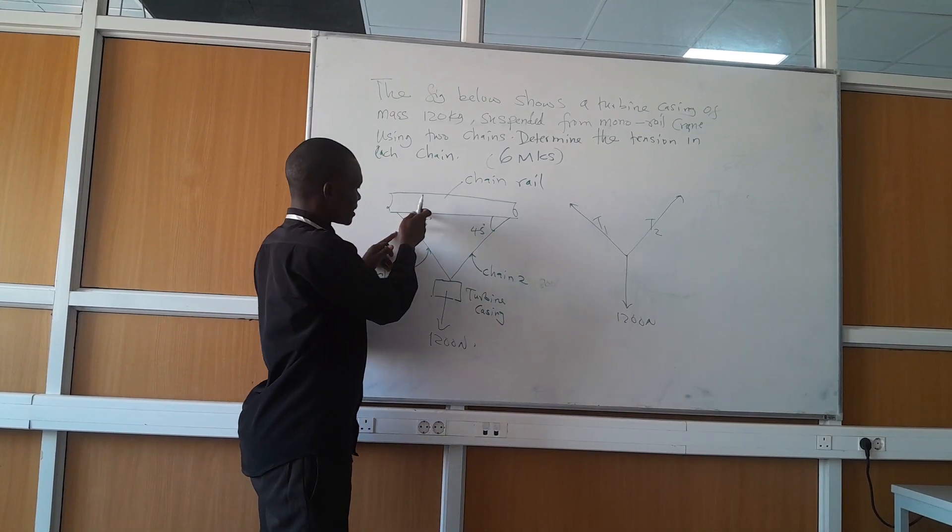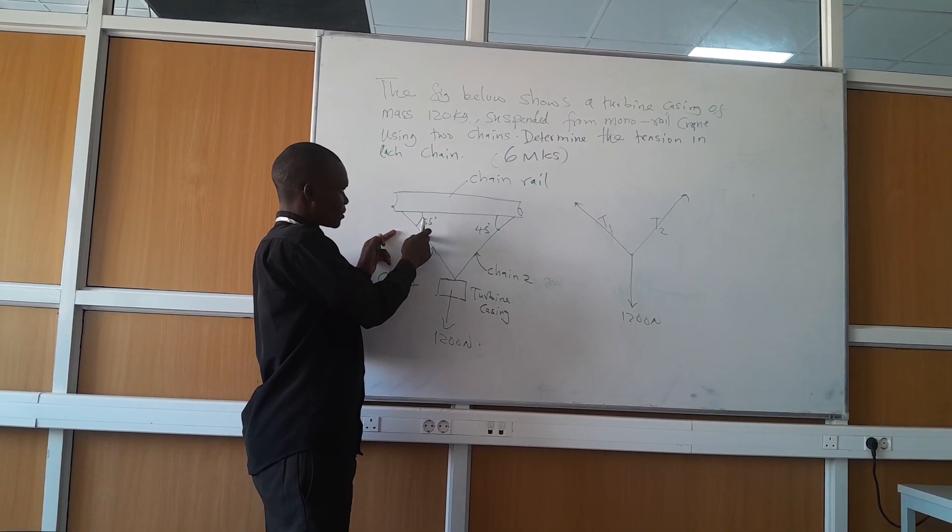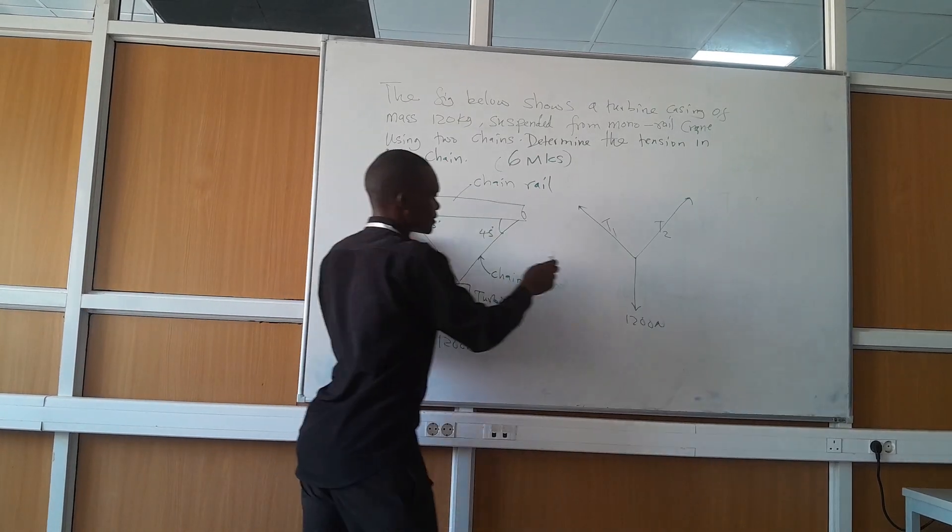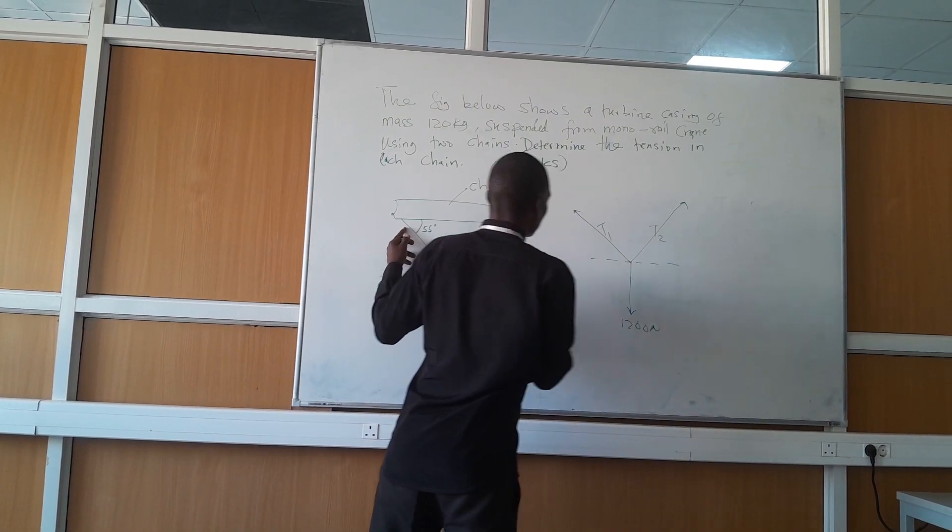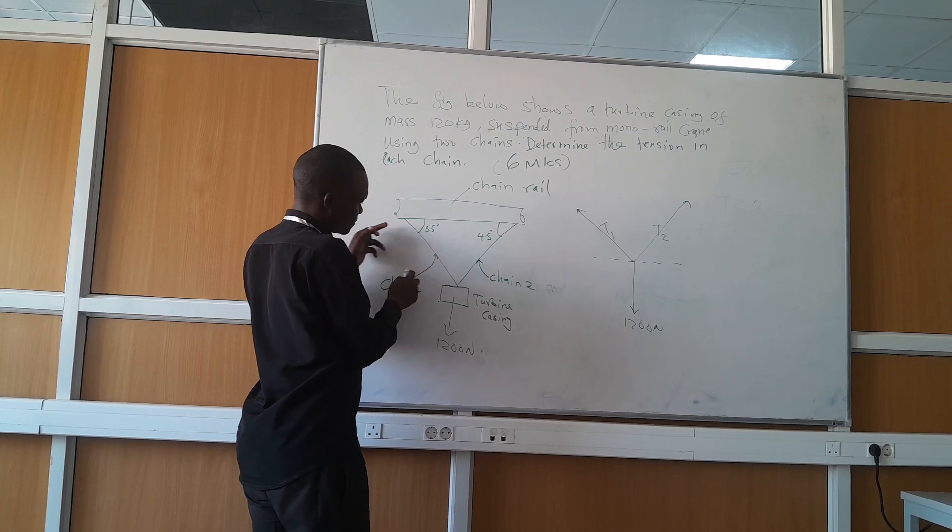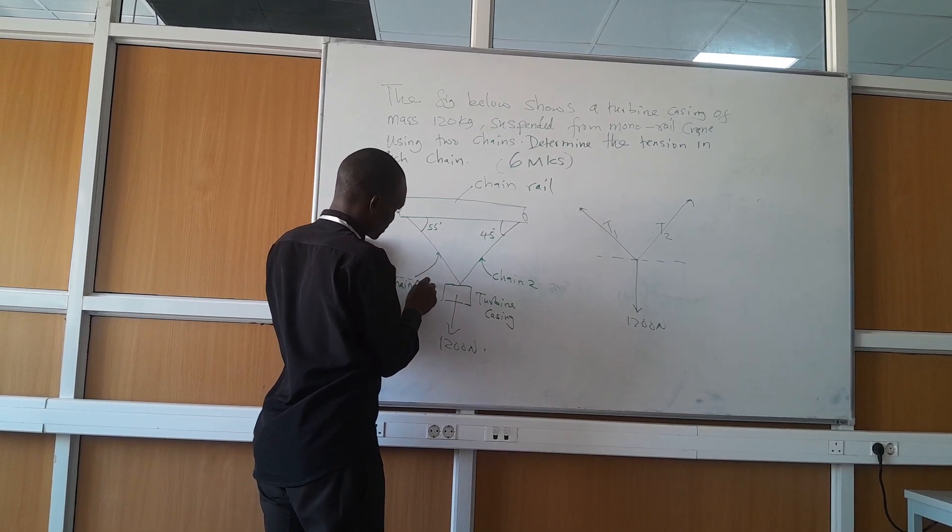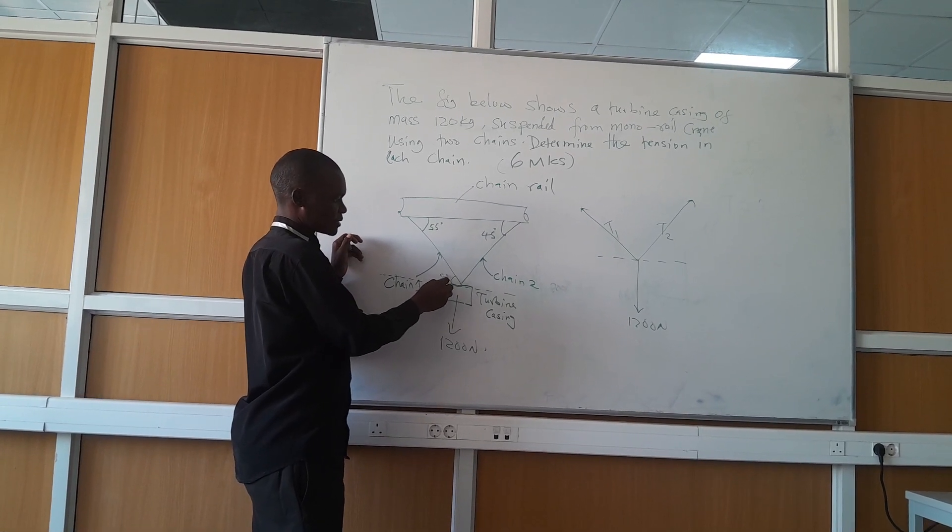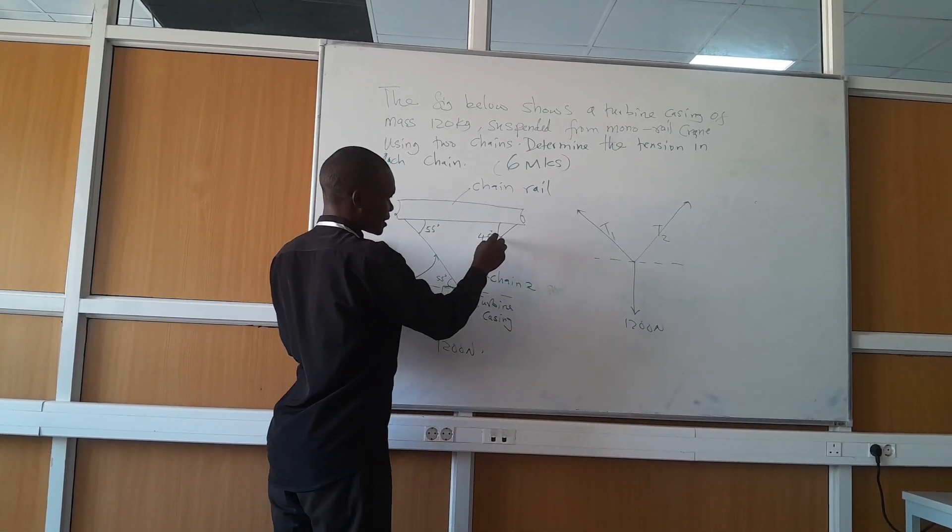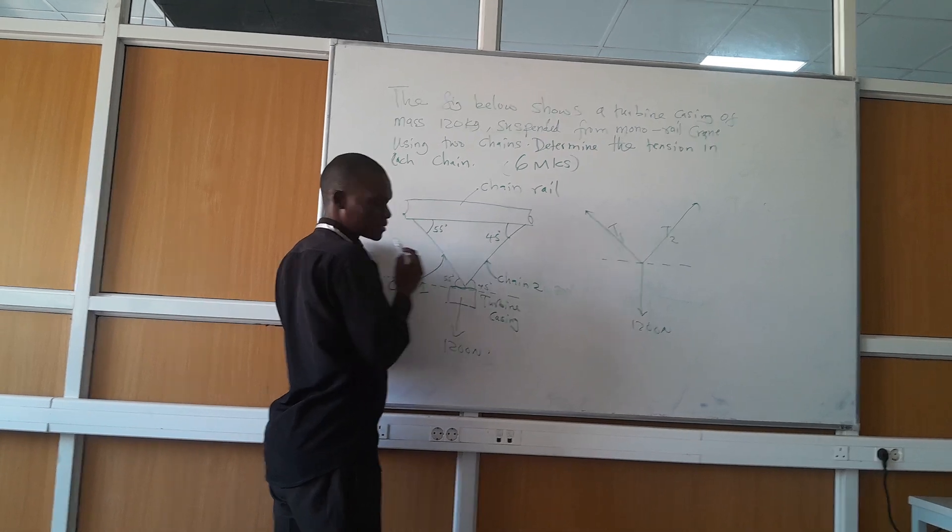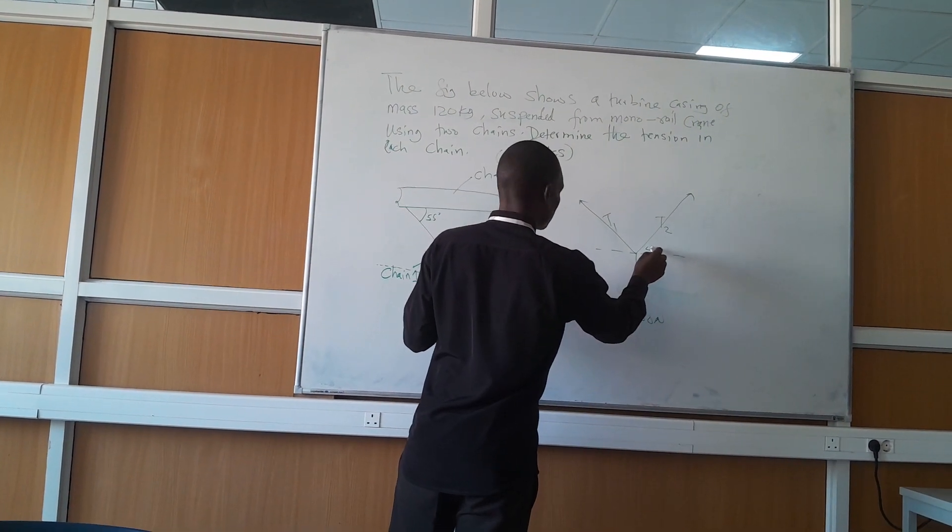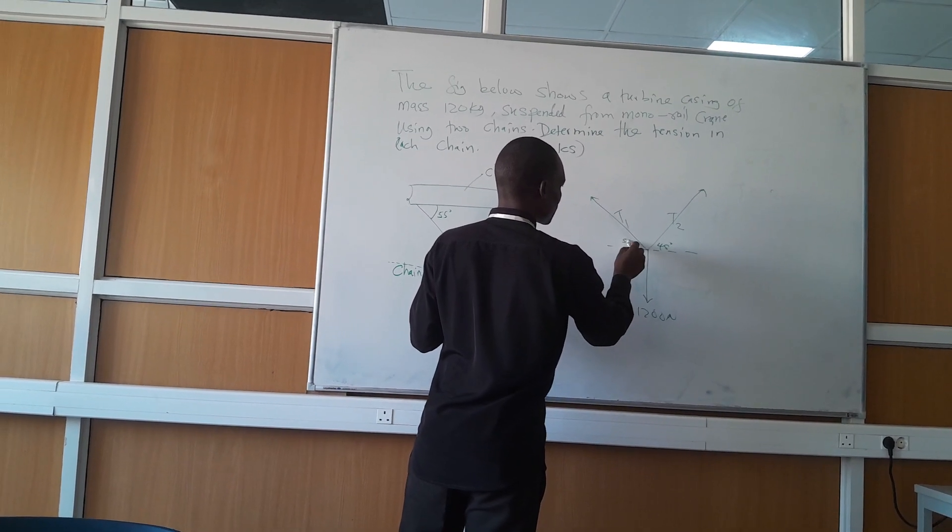Now, we have been given angle between the chain one and the chain rail, which is 55. So 55, you have a step line passing there. 55 is alternate to this, and 45 is alternate to that. So this is 45, and this is 55.